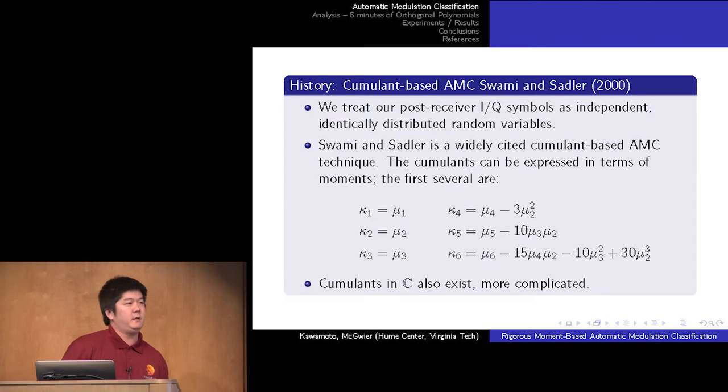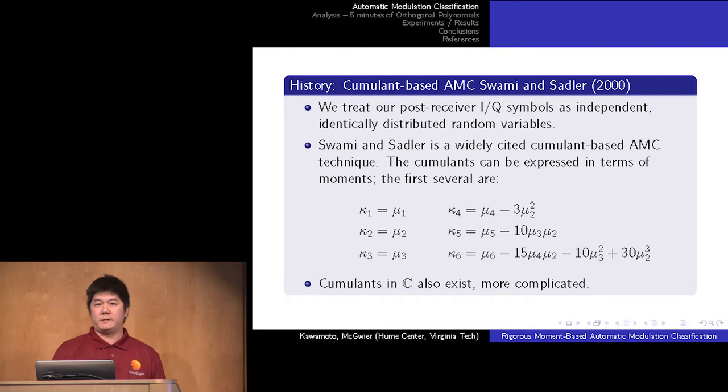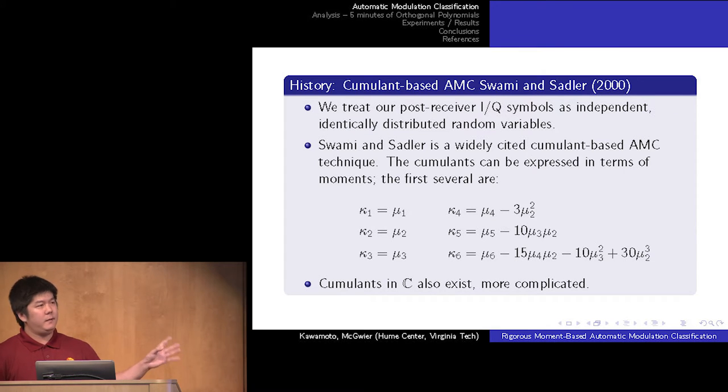The idea of this modulation recognition is that we treat all of our receiver symbols, post-receiver symbols, as an IID random variable. That means it's time synchronized, frequency synchronized, and phase offset has been corrected. You can do statistics on this - calculate the average value, the variance, and so on. In 2000, Swamy and Sadler came up with a decision tree which operated on cumulants. Cumulants are very much related to moments. The first three cumulants and moments are the same: the first one is the mean, the second is the variance, the third is the skew. When you get to the fourth cumulant and above, they start getting a little bit crazier.